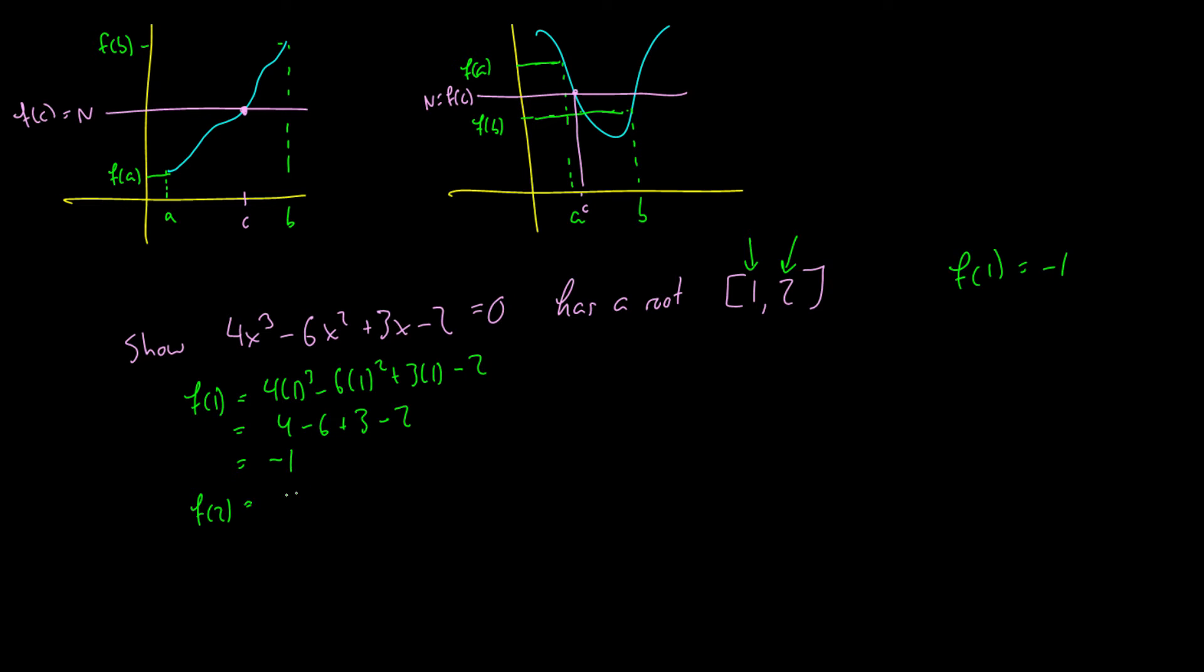Well, this is 4(2)³ - 6(2)² + 3(2) - 2 which is going to be the same as 32 - 24 + 6 - 2. Okay, so 32 - 24 is 8 plus 6 is 14 minus 2 is 12.